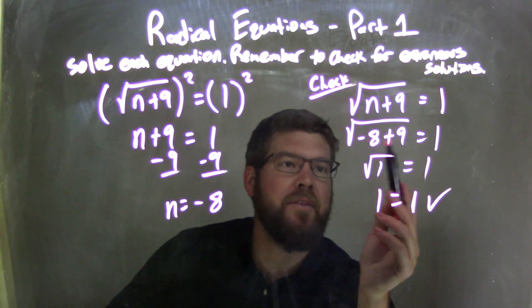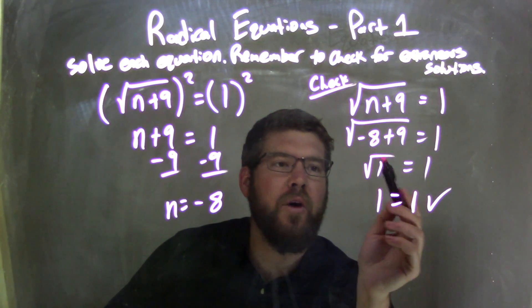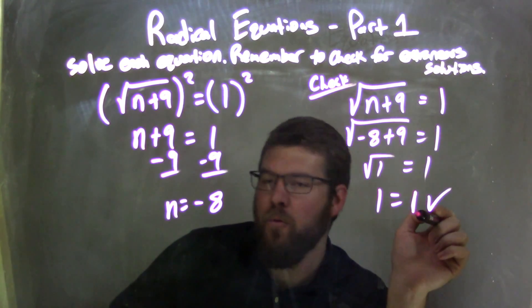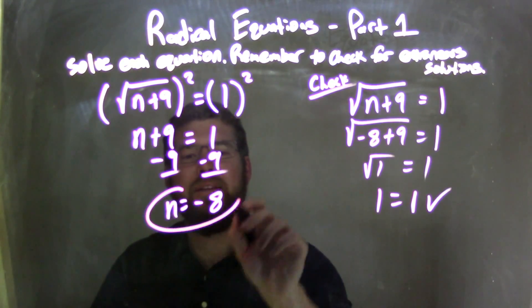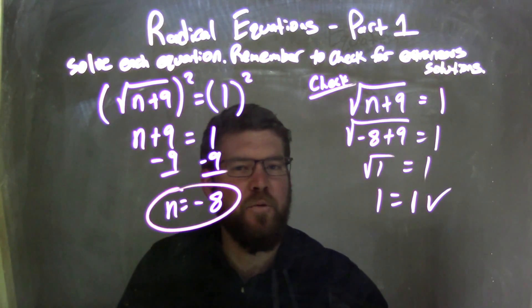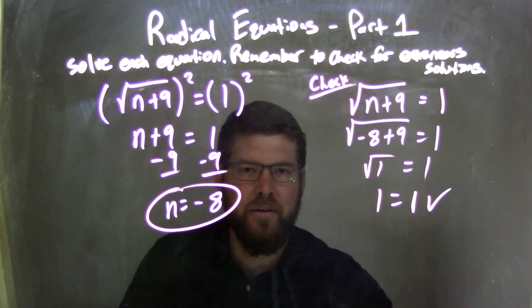In doing so, I had to simplify: negative 8 plus 9 is 1. Square root of 1 is just 1. I brought the 1 on the right down, and 1 does equal 1. That's a true statement. So I can confidently say that n equals negative 8 is my final answer.